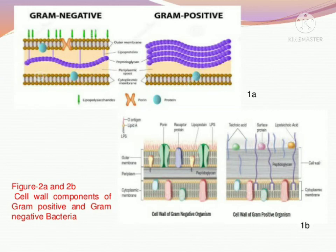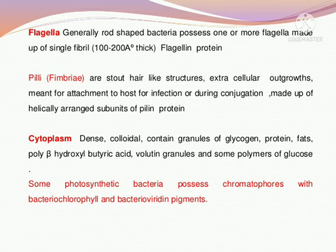As you know, lipids ki composition zyada hai — it means chances zyada hain us compound ke wash out hone ke with the help of alcohol. So when you apply alcohol on both gram negative and gram positive bacteria, in gram negative bacteria the lipids dissolve and the color comes out due to high lipid content. That is why gram negative bacteria become colorless, while gram positive bacteria remain colorful.